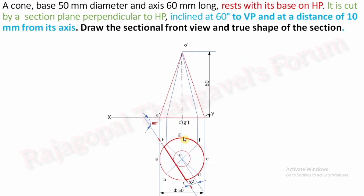Identify the cutting points of the section plane. The first point is 1 — extend a vertical projector to get 1 dash in the front view. The next cutting point is on generator OA; make it 2. Draw a perpendicular vertical projector up to OA. Check O dash and A dash — on the OA generator it meets at 2 dash.